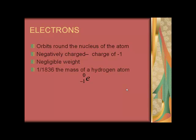The weight of an electron is one by 1836 of the mass of a hydrogen atom. It is represented by e superscript zero and subscript minus one. The superscript zero represents negligible weight and the subscript minus one represents negative charge on the electrons.